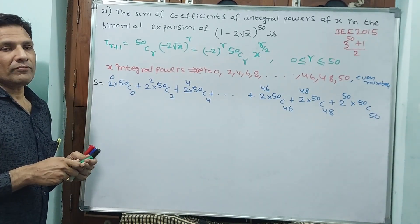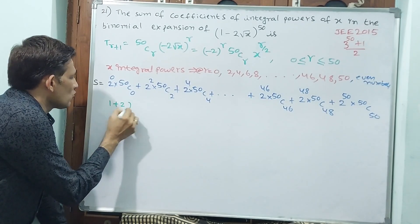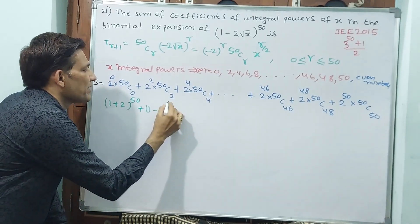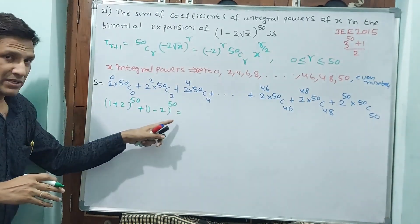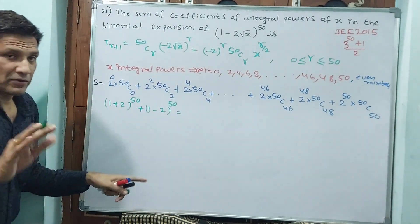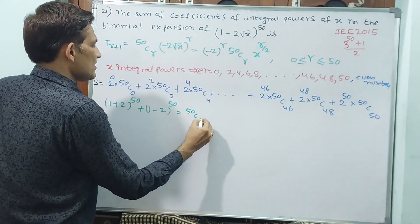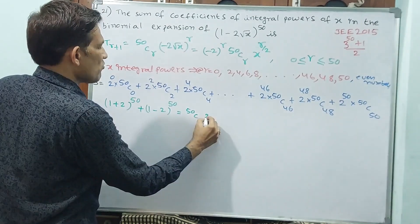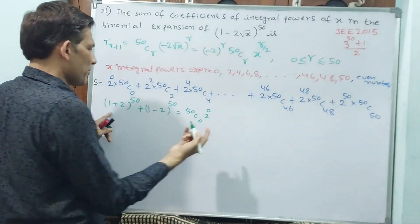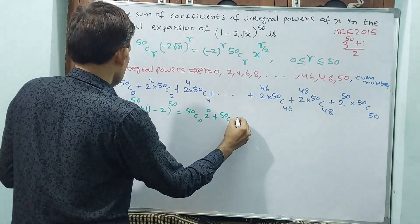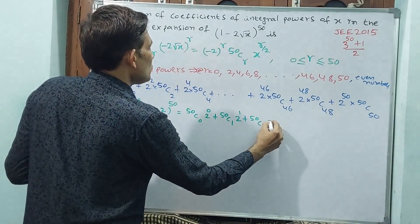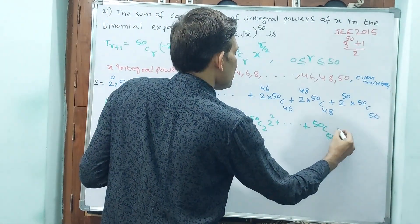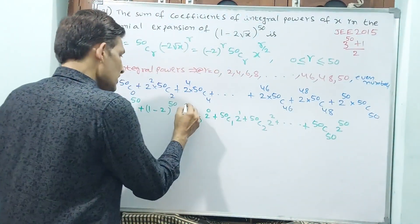Consider (1 + 2)^50 + (1 − 2)^50. The first expansion gives: 50C0 · 2^0 + 50C1 · 2^1 + 50C2 · 2^2 + ... + 50C50 · 2^50.